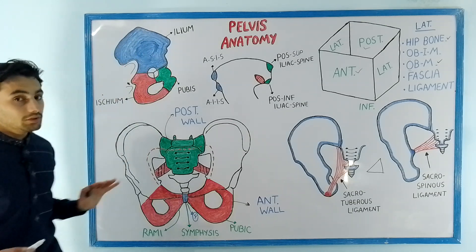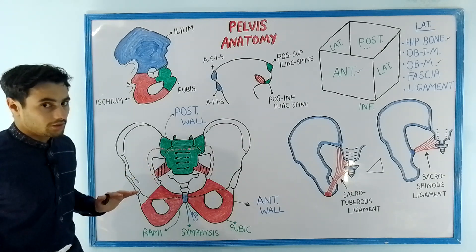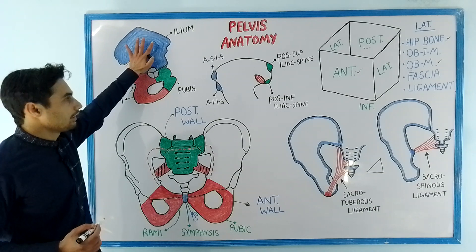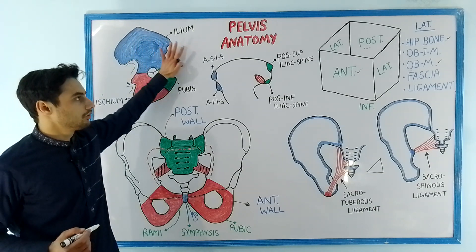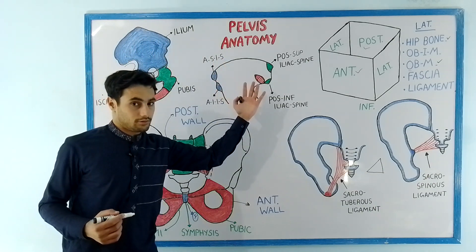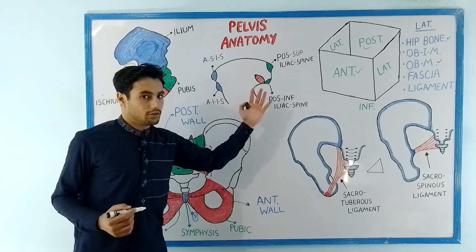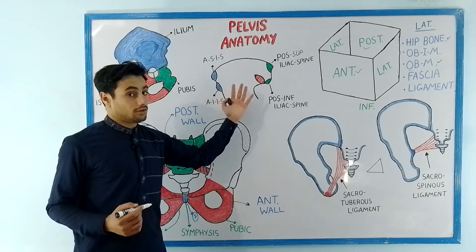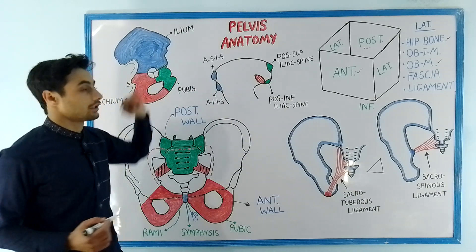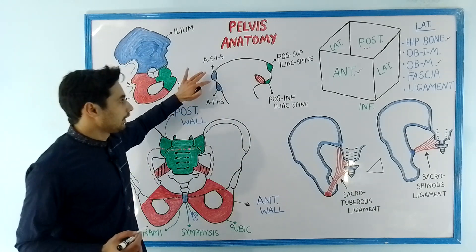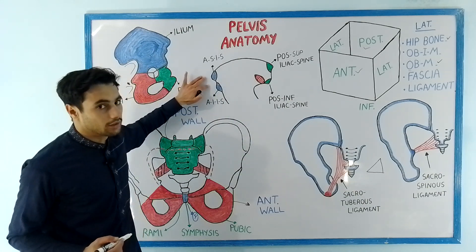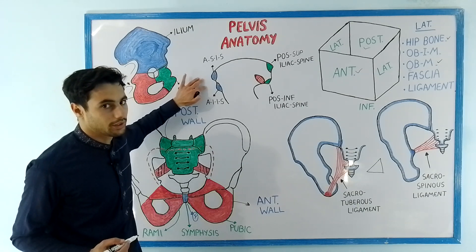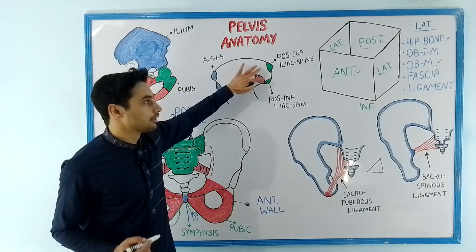This is the lateral surface of the hip bone. Let's take out the ilium bone and study its anatomical features. This is the lateral side, and if I turn this bone, I get the medial side of the ilium bone. On the ilium bone's medial side, we have four spines — two spines are present anteriorly and two spines are present posteriorly.